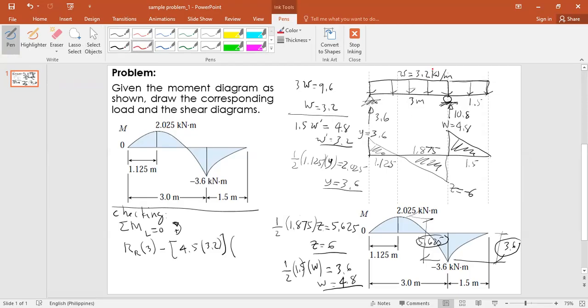So the area is equal to 4.8. So 1.5 omega prime is equal to 4.8. Omega prime is 4.8 divided by 1.5, which is 3.2. Same value, 3.2. So therefore, the uniform load started there, correct. Same value of omega. So this is our load diagram. Let's check. Checking. Let's sum up moment about the left support. The left support is zero. Counter-clockwise positive.